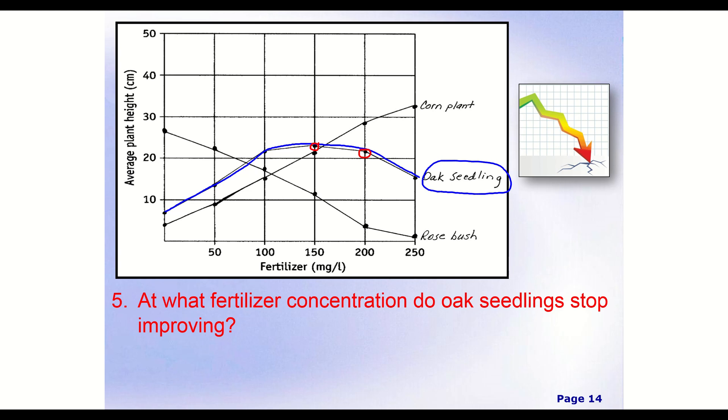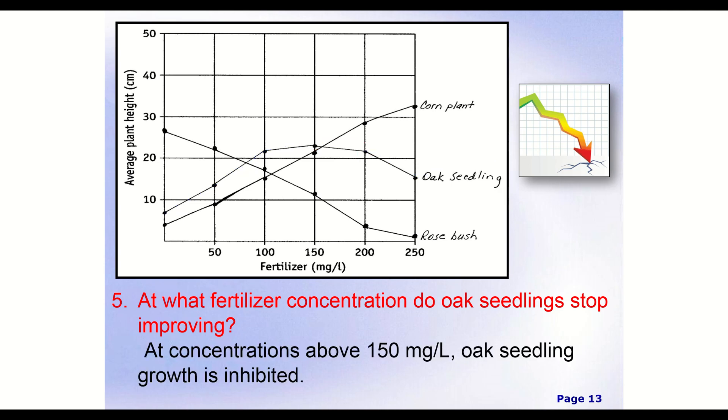So somewhere between those two points, so somewhere between here and here, we started to decrease. So our answers could vary slightly, but I would say really, once you get to 150, it's no longer going to help us anymore. So a possible answer that we could have is at concentrations above 150 milligrams per liter, oak seedlings growth is inhibited. So it slows down. So after that's kind of that 150 is kind of our marker. Once we get past this point here, it starts to go down. So after anything above 150 would be a fertilizer concentration that does not help us.